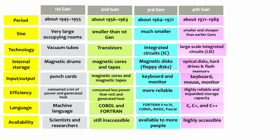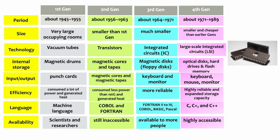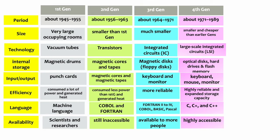Fourth generation computers were smaller and cheaper than computers in the earlier generations. They used a microprocessor as the main electronic component. This was a large-scale integrated circuit, abbreviated as LSI. This microprocessor had several hundred thousands of transistors placed on a tiny silicon chip. They used magnetic disks, optical disks, hard drives, and flash memory media for data storage. They used input and output devices such as keyboard and mouse. Fourth generation computers were energy efficient and highly reliable. They ran on sophisticated operating systems and improved programming languages, and had expanded storage capability. They used programming languages such as C, C+, and C++.